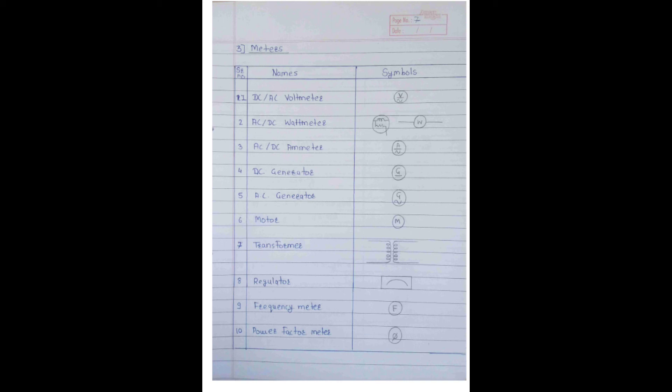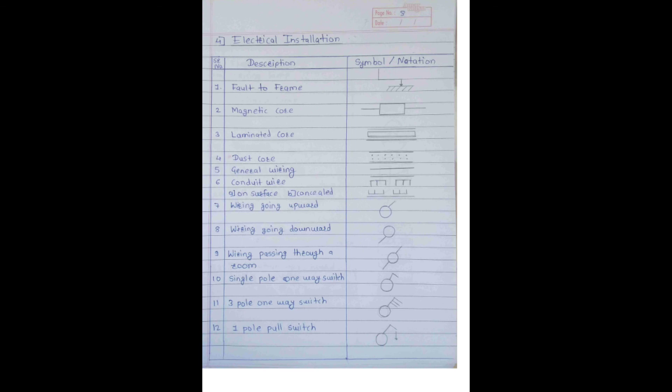Magnetic core, laminated core, dust core, general wiring, conduit wiring on surface and concealed, wiring going upward, wiring going downward, wiring passing through a wall, single pole one-way switch, three pole one-way switch, one pole pull switch.